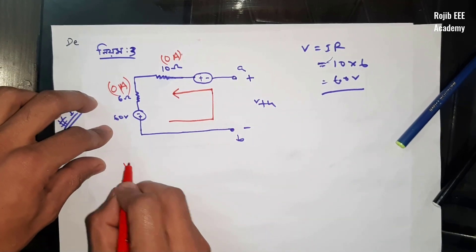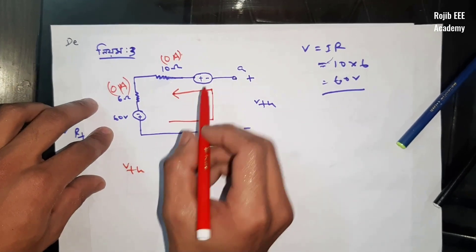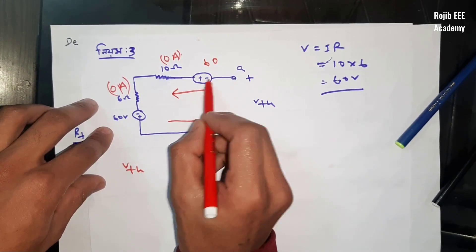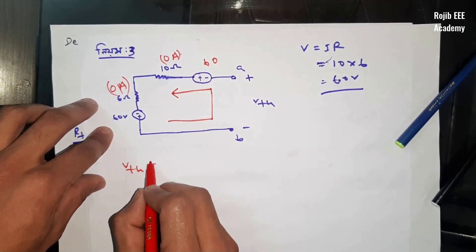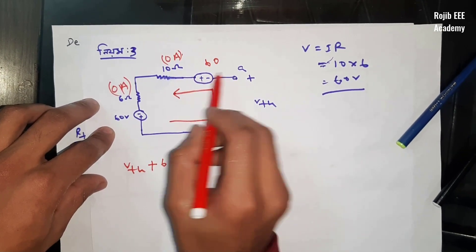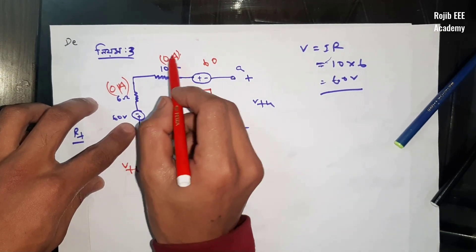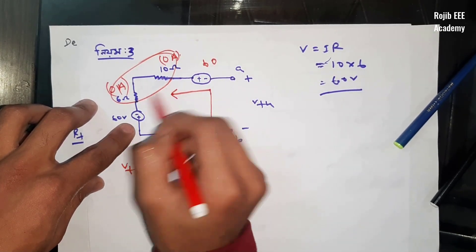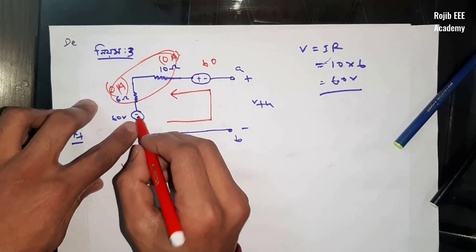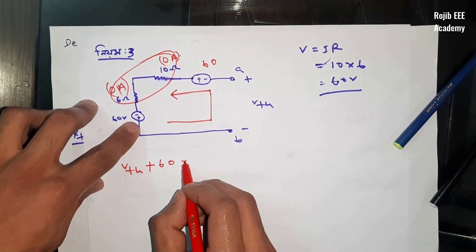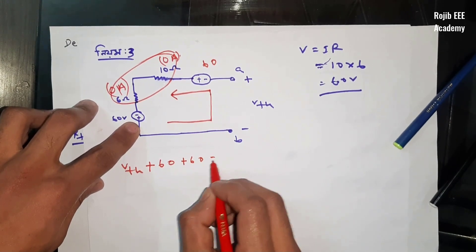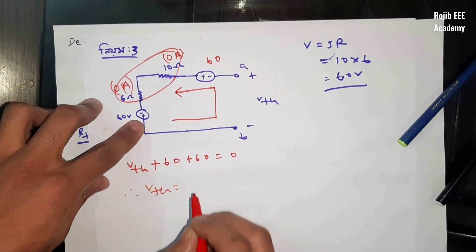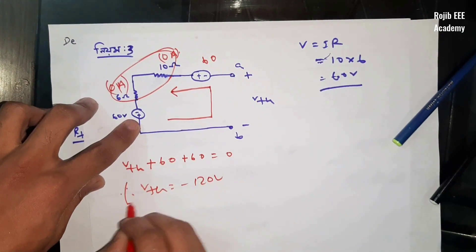The current flow is in the positive direction, so positive VTH. This value is 60 volts on the positive side. Then accounting for the voltage, VTH is equal to minus 120 volts.